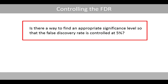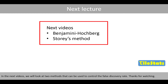So, is there a way to find an appropriate significance level so that the false discovery rate is controlled at 5%? In the next videos, we'll look at two different methods that can be used to control the false discovery rate. Thanks for watching!